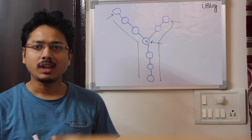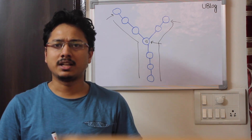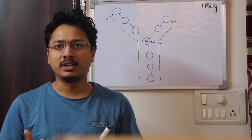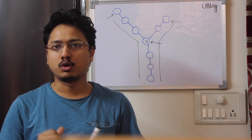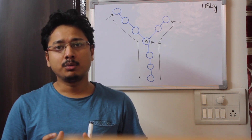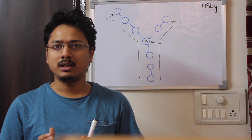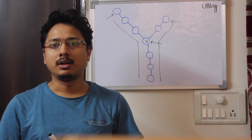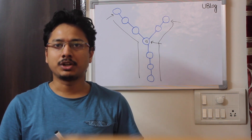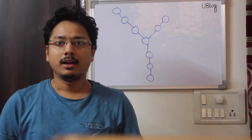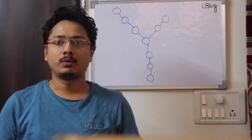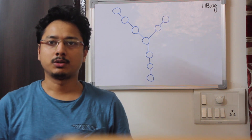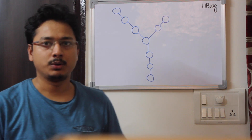In the previous video we discussed finding a loop in a linked list and finding the first node of the loop. Think for a while and see if you can convert the current intersection question into that loop question. I think you would have got the idea — let me show you how to do so.